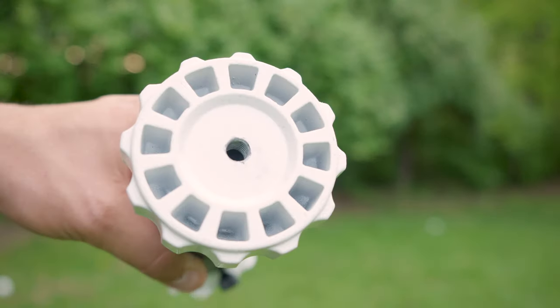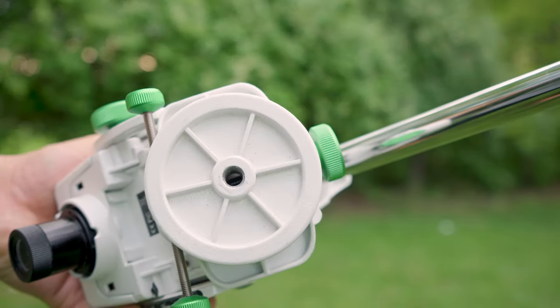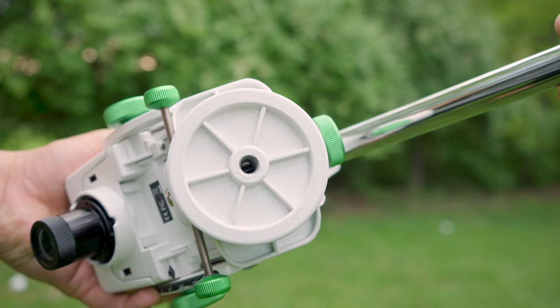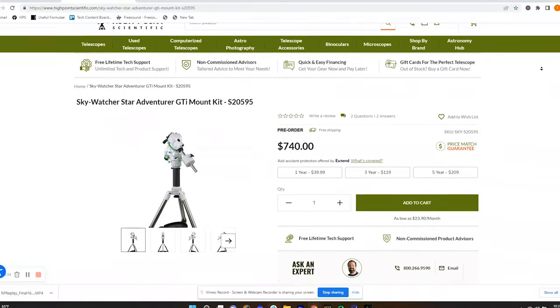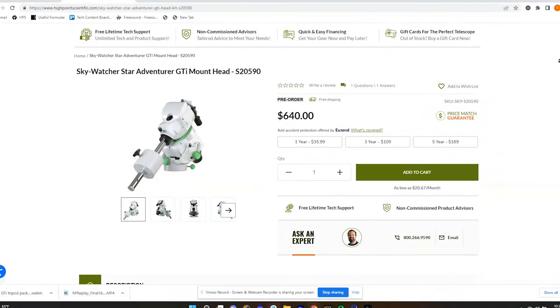Included in bottom of both the pier extension and the mount head itself is a 3 8th 16th adapter. This is great for those of you who own a photographic tripod. This means that you do not have to purchase the Skywatcher GTI package with the included tripod. You can just purchase the mount head on its own and use your own photographic tripod.